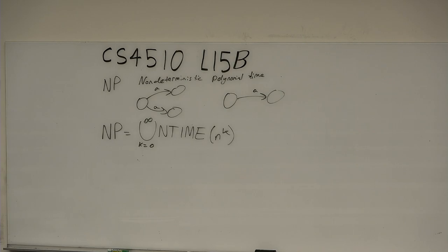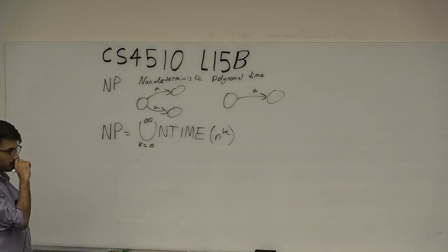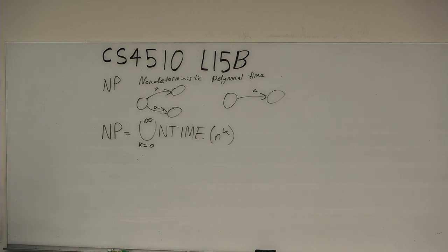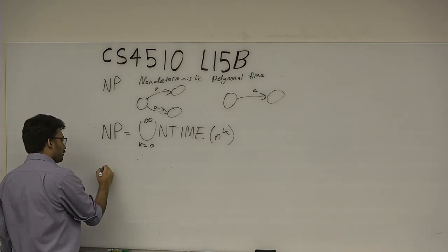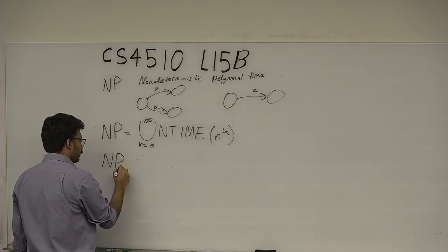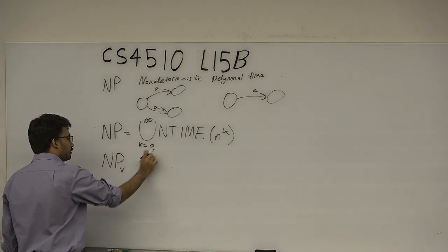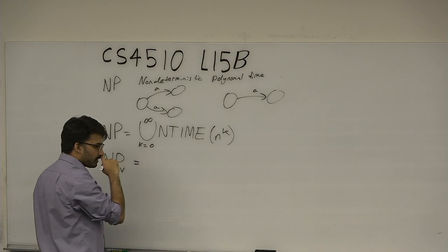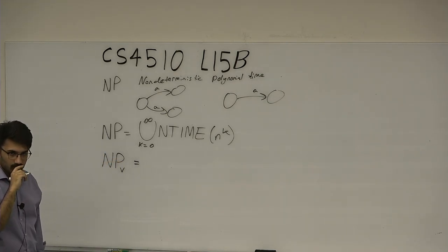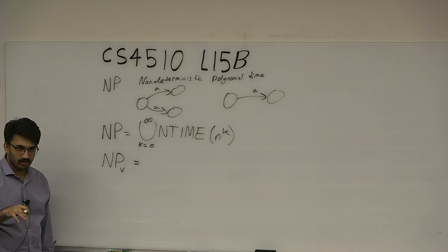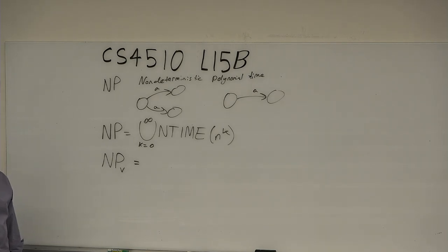You got a definition of NP from algorithms. Today, my goal is to prove that among other characterizations of NP, those two definitions are equivalent. In algorithms, you learn that NP — I'm going to call this NP_V — is the class of languages verifiable in polynomial time. There exists an algorithm that can verify a solution to a problem. It doesn't have to find the solution, but given the solution, it can check if it's correct or not.